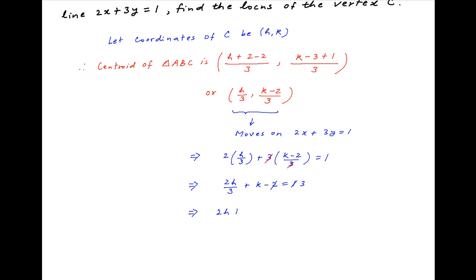Which implies that 2h + 3k = 9. And therefore the locus of the vertex C of triangle ABC is obtained by replacing h with x and k with y, and is therefore given by the line 2x + 3y = 9, which is the required answer.